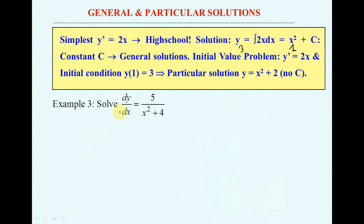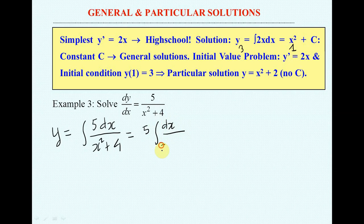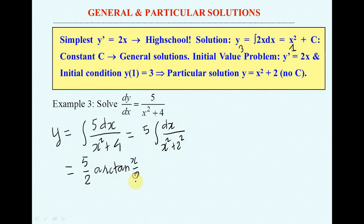You have simple derivative, so you just take integral. And to take that integral, you must remember the basic integral. Let's take integral outside. Bring 2 outside, so your answer is 5 over 2 arctan(x/2) plus C.